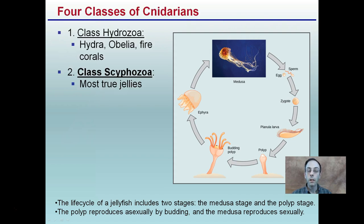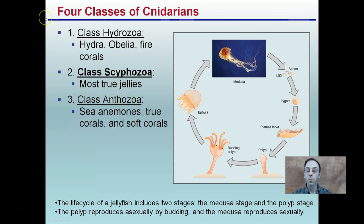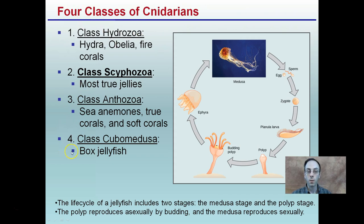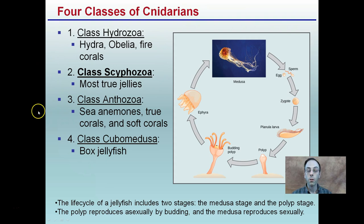There are different classes within this phylum. Remember, phylum is the broader way of categorizing things; classes are a little more specific. Box jellyfish, sea anemones, true jellyfish, and fire corals are all under the same phylum, but you can see there are four different classes.